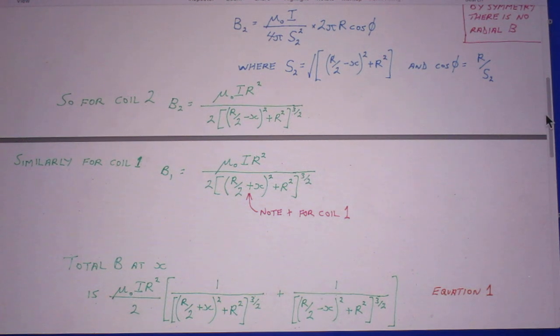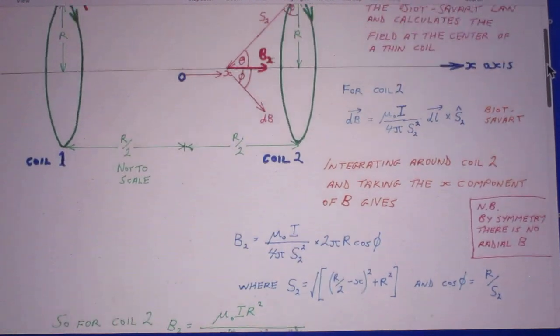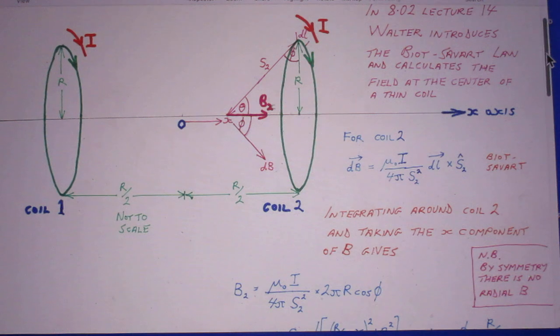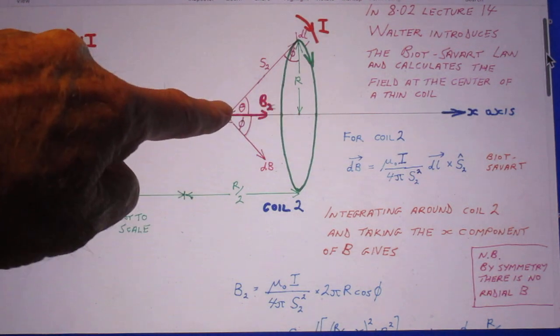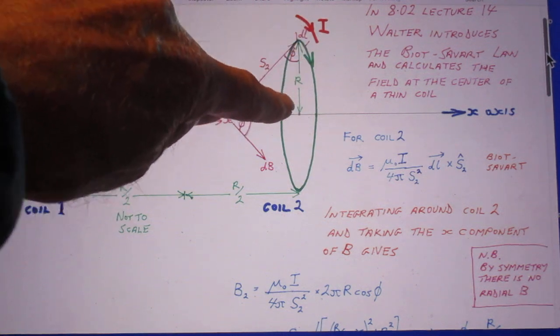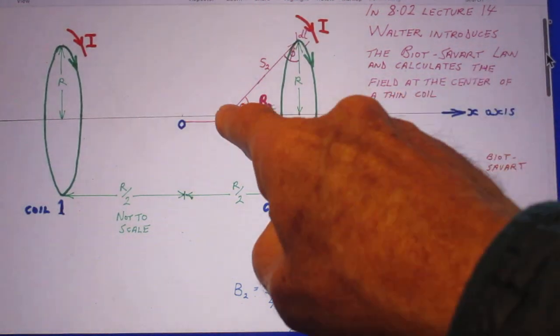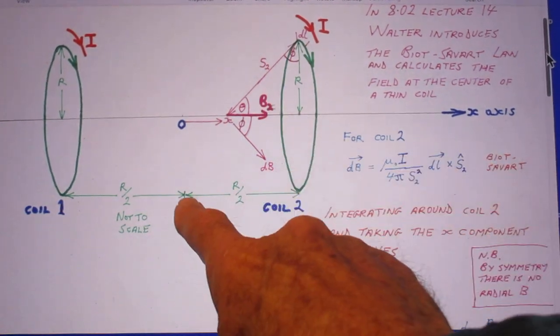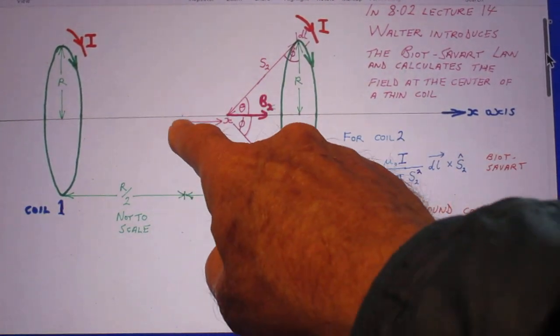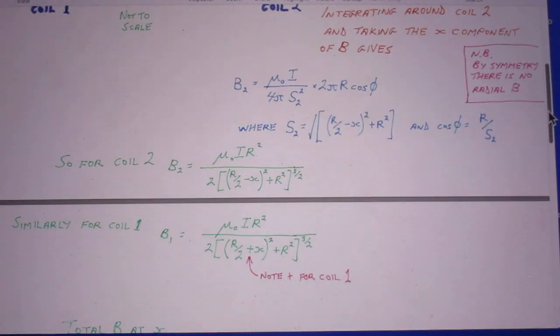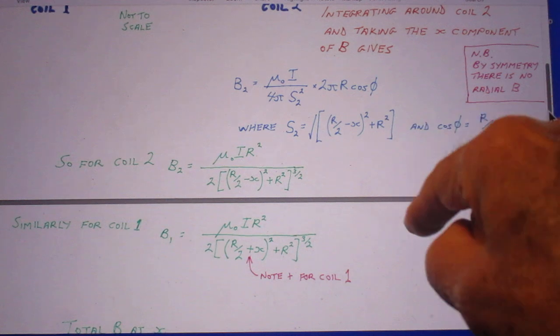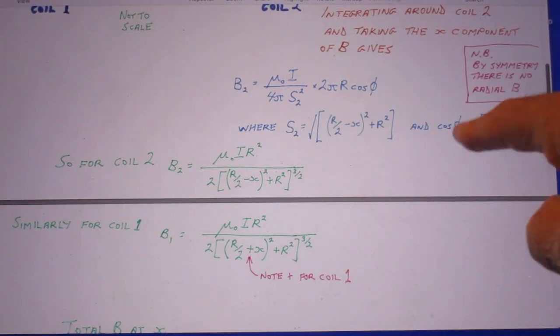So now he has to calculate the length of s₂, and he uses Pythagoras. This squared is this squared plus this squared. And this from here to here is r/2 minus x. And there is this r/2 minus x. So this is Pythagoras, and here is the cosine of φ.